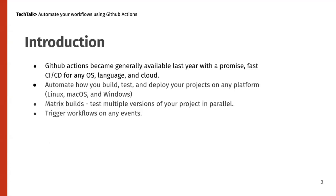GitHub Actions became generally available last year with a promise of fast CI/CD for any OS, language, and cloud. With GitHub Actions, you can create CI/CD pipelines and automate how you build, test, and deploy your projects on any platform, including Linux, macOS, and Windows. It also provides matrix builds, so you can run multiple versions of your project in parallel.